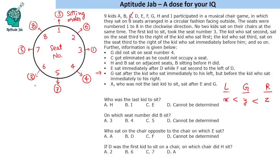Looking through the sitting orders: 3, 8, 5 is not possible. We find that 8, 5, 2 is one possibility, and 7, 4, 1 is another possibility. So we have two possible positions for G — the central one in each triplet. Since G did not sit on seat number 4, the case with sitting order 7, 4, 1 is not possible. Therefore G is the central person in the 8, 5, 2 triplet, meaning G is sitting on seat number 5.